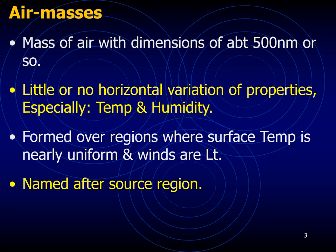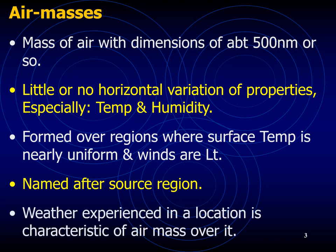Air masses originate from what we know as source regions. In order for a huge mass of air to develop uniformly similar characteristics, its source region should be generally flat and of uniform composition with light surface winds. The longer the air remains stagnant over its source region, or the longer the path over which the air moves, the more likely it will acquire properties of the surface below. Consequently, ideal source regions are usually those areas dominated by surface high pressure.